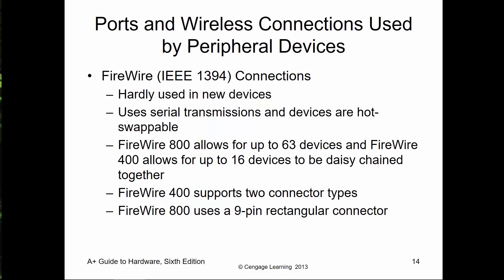Moving on to FireWire: USB is far more common than FireWire. FireWire is common with Mac products or high-end video equipment. There are two main versions — FireWire 800 and FireWire 400 — very similar to USB except for the device count.